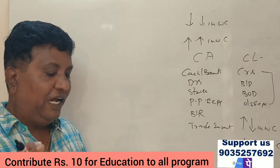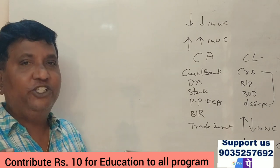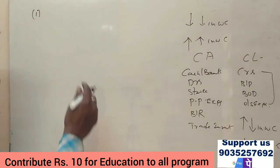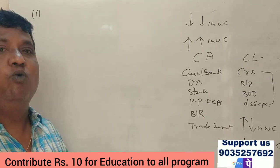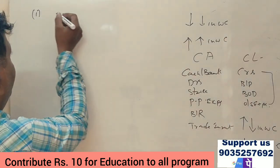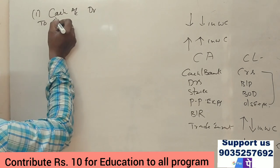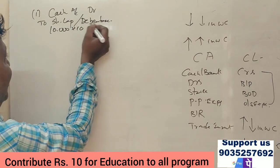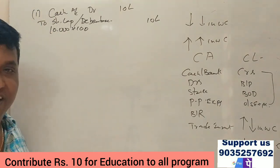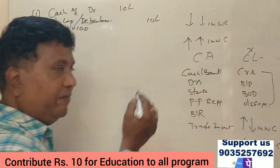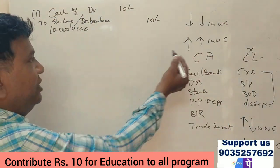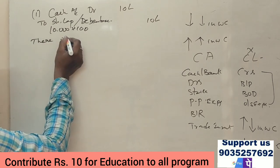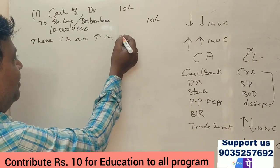First question: A company issues 10,000 shares of ₹100 each at par. When shares or debentures are issued, cash comes in. Journal entry: Cash account debit to share capital account or debentures account. 10,000 × 100 = ₹10 lakh. Share capital and debentures are not current liabilities; cash is a current asset. Therefore, this results in an increase in working capital.